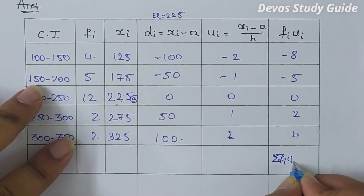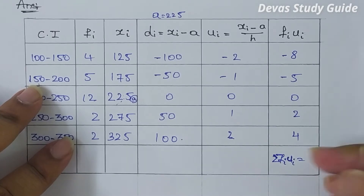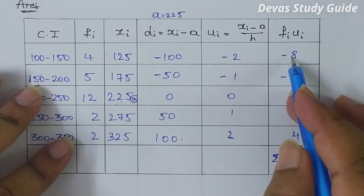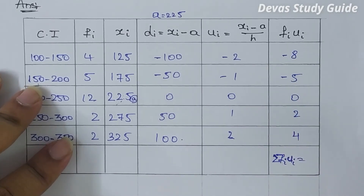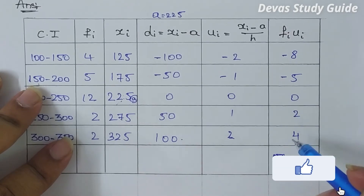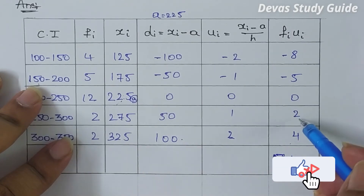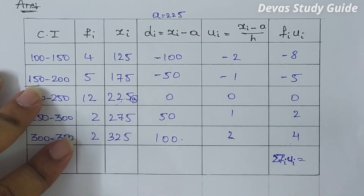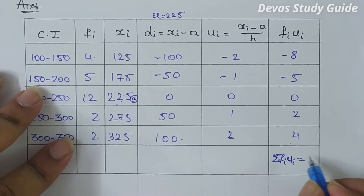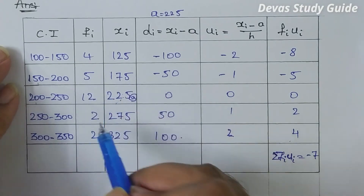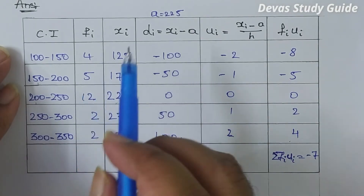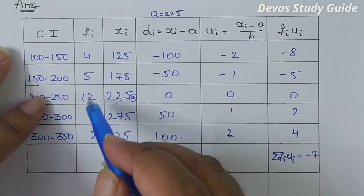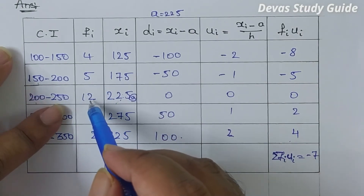The sum of fi times ui: minus 8 plus minus 5 gives minus 13, then minus 13 plus 6 gives minus 7. So sigma fi ui is equal to minus 7.